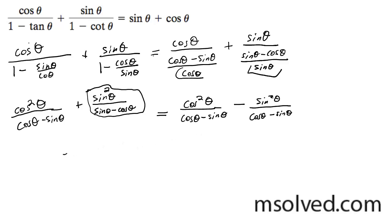You can put these two together, so you end up with cosine squared theta minus sine squared theta over cosine theta minus sine theta.